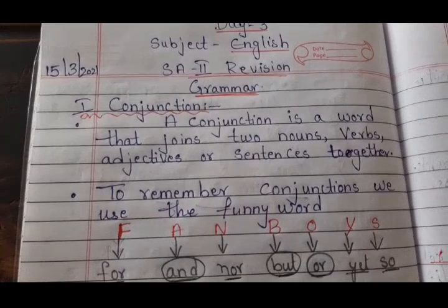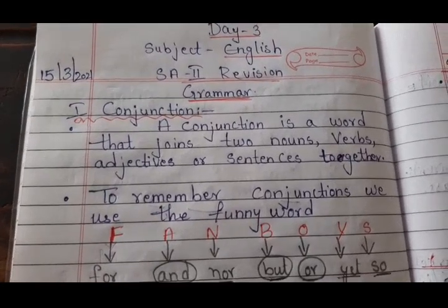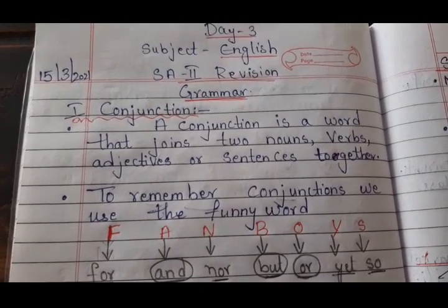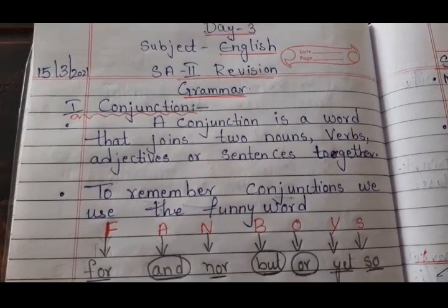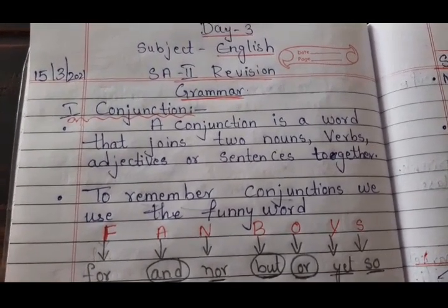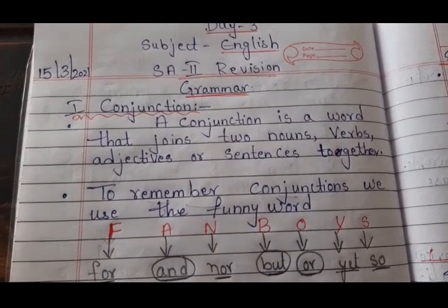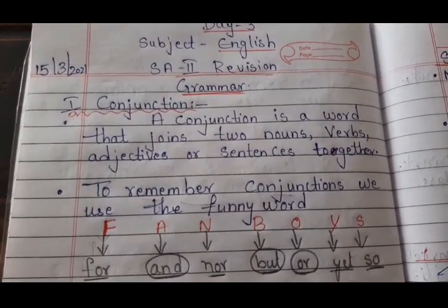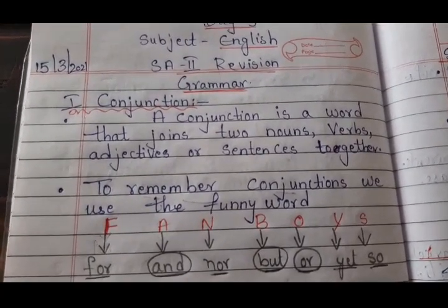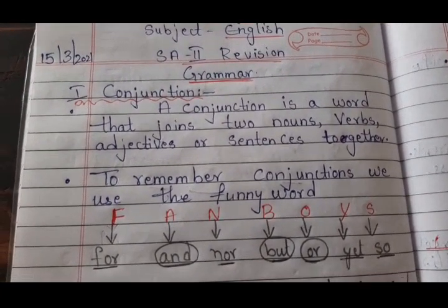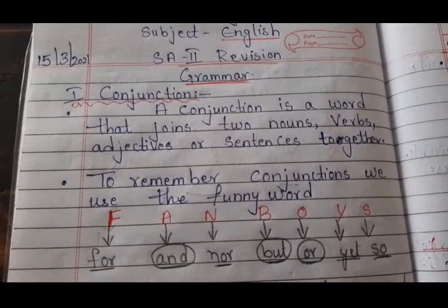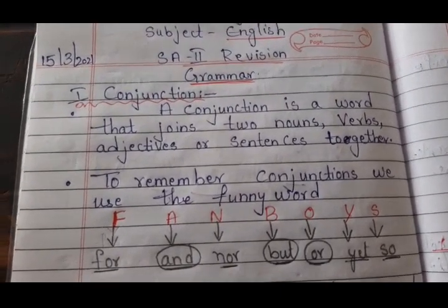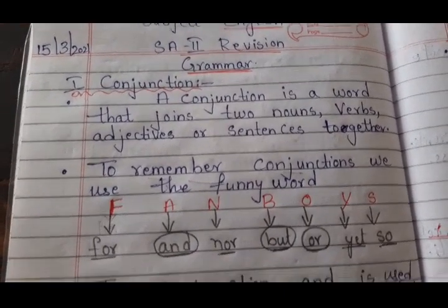Conjunctions. A conjunction is a word that joins two nouns, words, adjectives, or sentences together. Two sentences together, children.